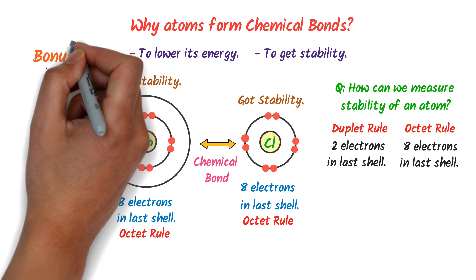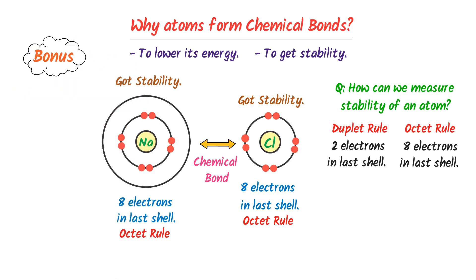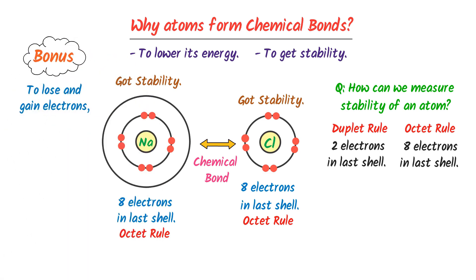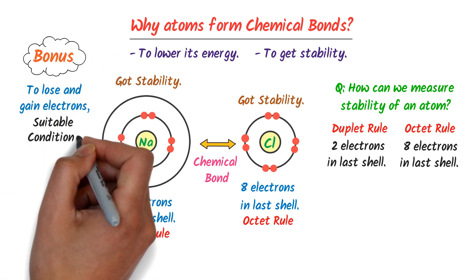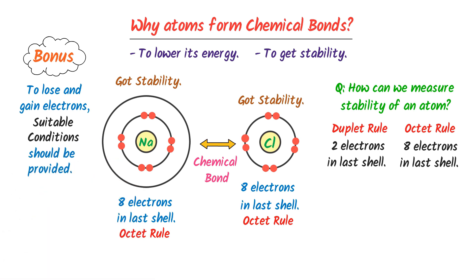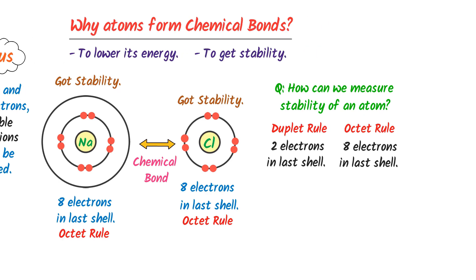Here is one bonus point. In order to lose and gain electrons, suitable conditions must be provided to an atom. Otherwise, the atom will neither gain nor lose an electron. Thus, remember that atoms form chemical bonds in order to get stability.